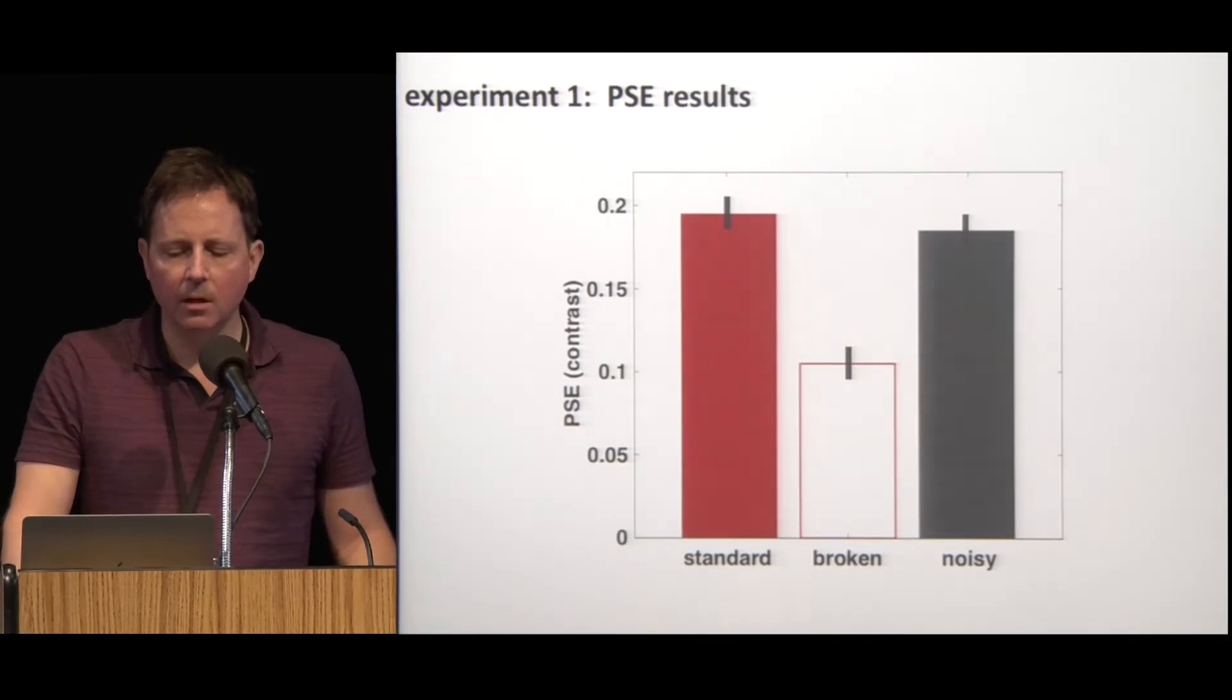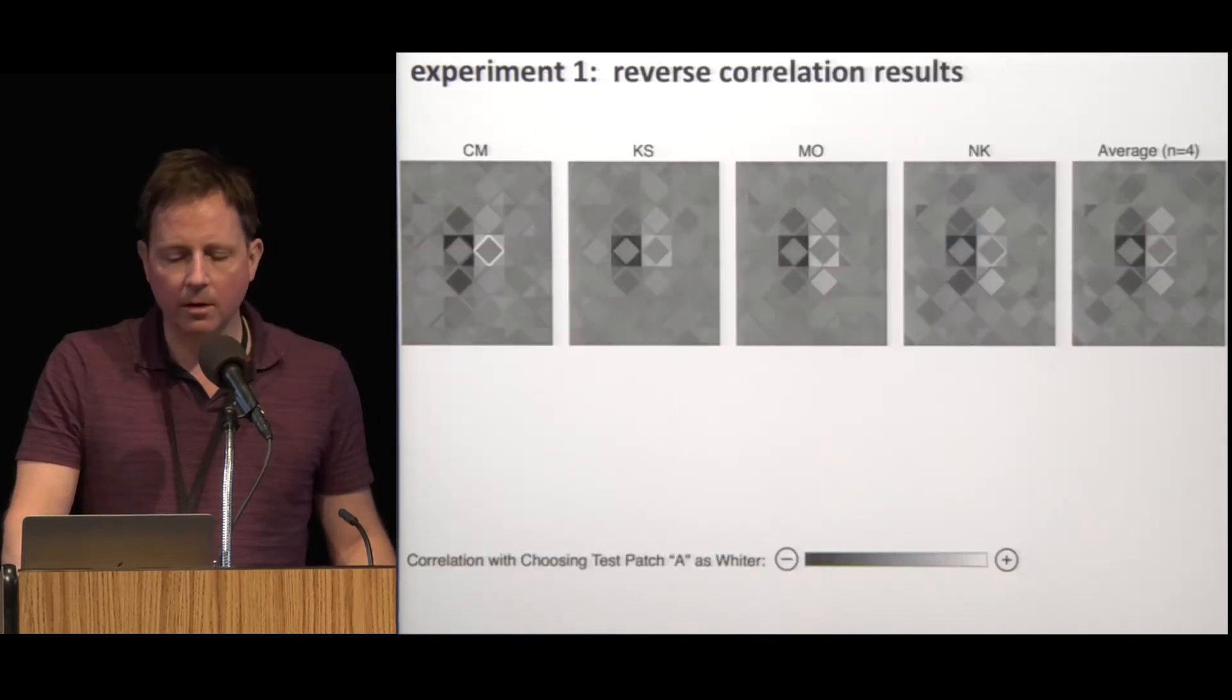Here are the results. First, the PSEs. This plot shows how much the contrast of test diamond A, the one on the left, had to be increased in each condition in order for the two test diamonds to look the same. As expected, there was a strong illusion in the standard and noisy argyles and a much weaker illusion in the broken argyle.